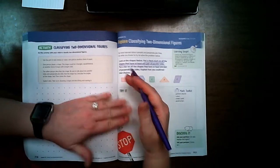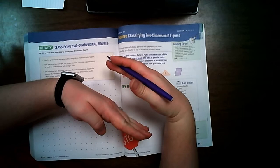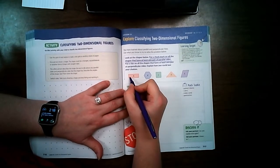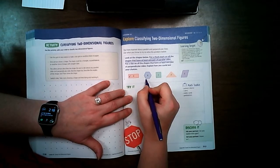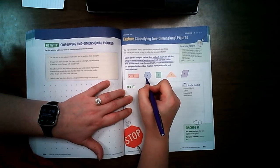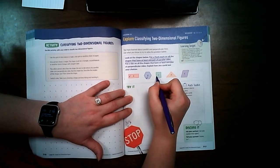Parallel means that they are like this. They will never cross each other. So we're going to put a check on all of them that do. So this one does because of here and there. This one does because of that and that. A square does.